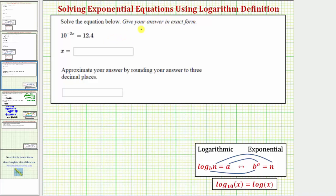We want to solve the given exponential equation and give the answer in exact form as well as round it to three decimal places. So the given exponential equation is 10 raised to the power of negative 2x equals 12.4.